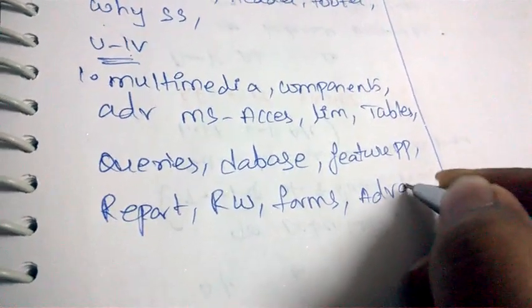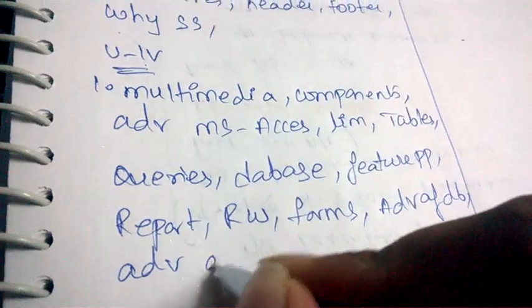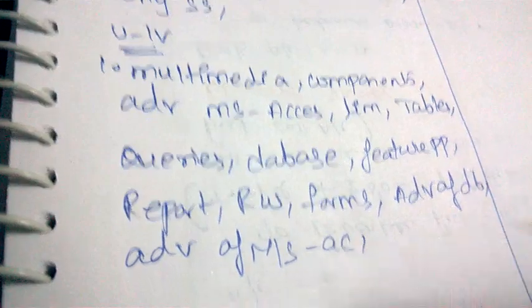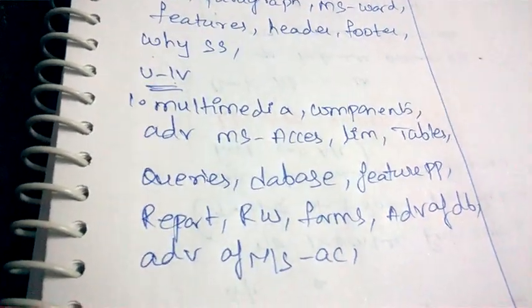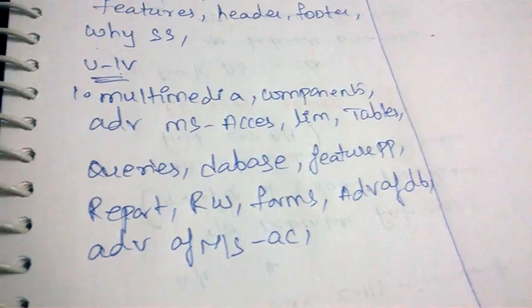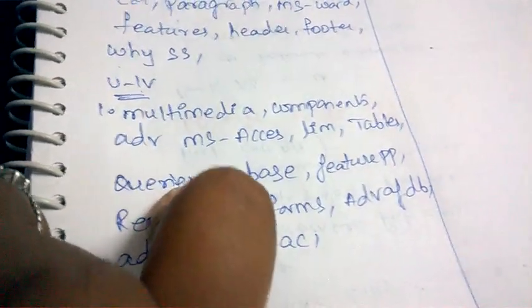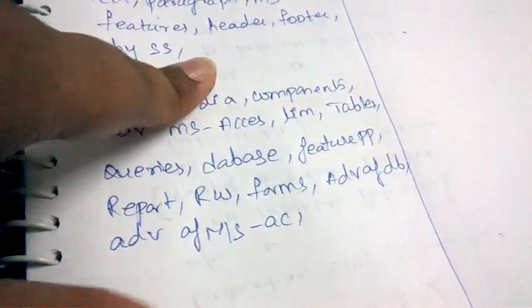Advantages of database and advantages of MS Access are also important in Unit 4. In this unit all topics are very important, but the most repeated questions are queries in MS Access, multimedia, and PowerPoint — these four topics are very important in this unit.